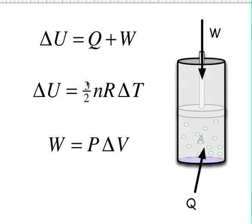The change in internal energy that you found from above will be equal to 3 halves nR delta T, and the work that you do to the container is equal to the pressure times the change in volume.